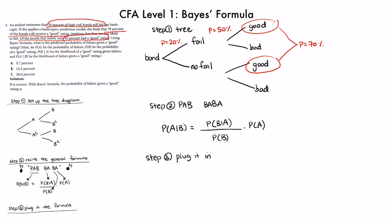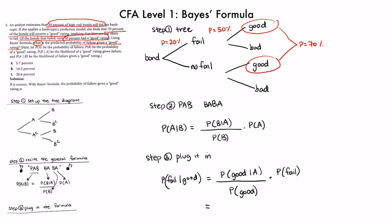Plugging in: probability of fail given a good rating equals probability of good given fail divided by probability of good times probability of fail. Probability of good given fail is 50%, divided by the probability of good in either case (70%), times the probability of fail (20%). The answer is 14%, which is answer B.